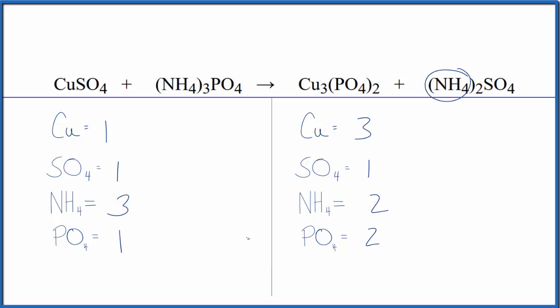So let's start off by balancing the coppers. We could put a three in front of the copper sulfate. One times three, that's three. We've balanced those, and then we have one sulfate times three, we have three sulfates.